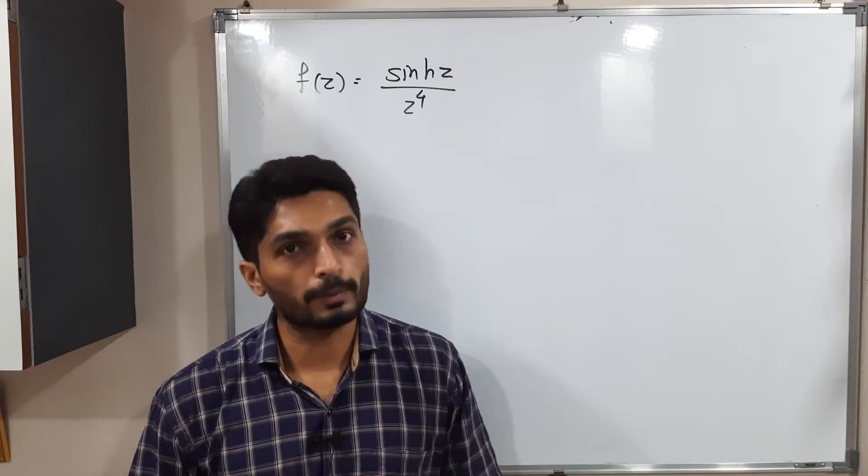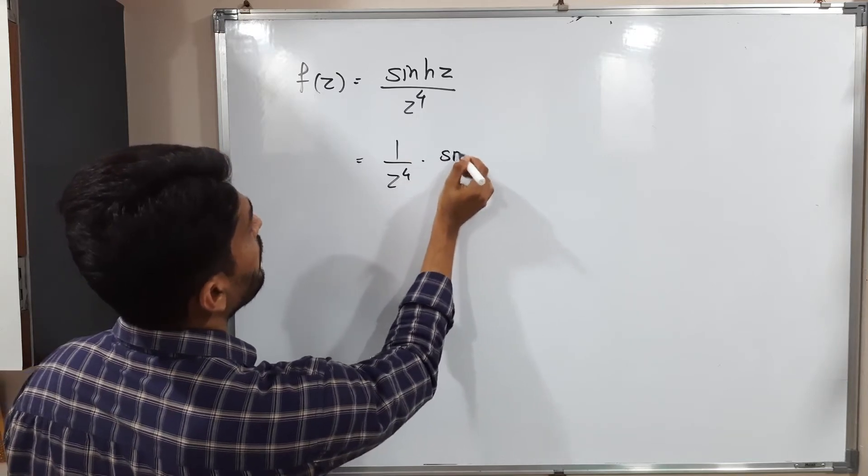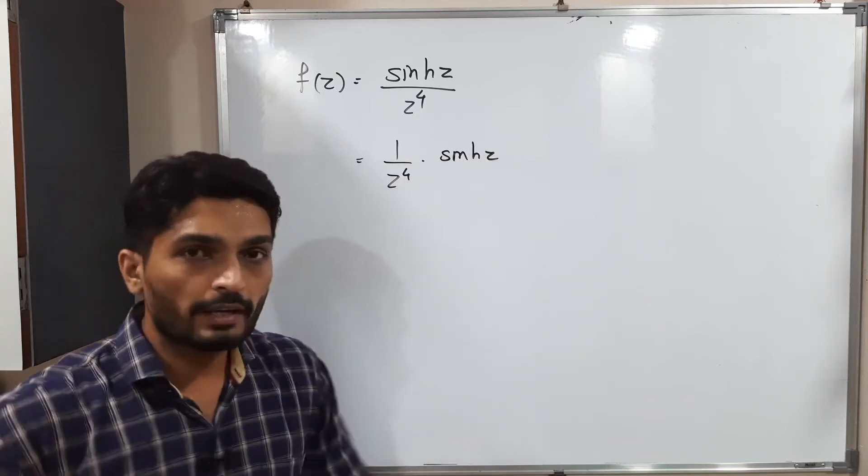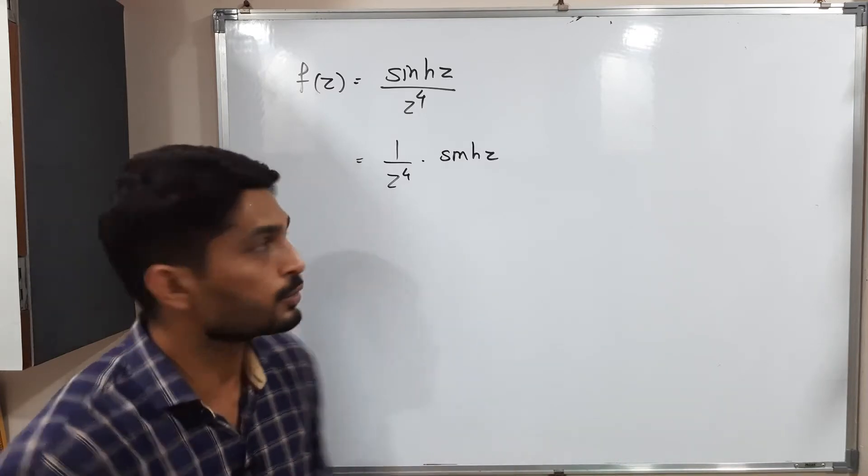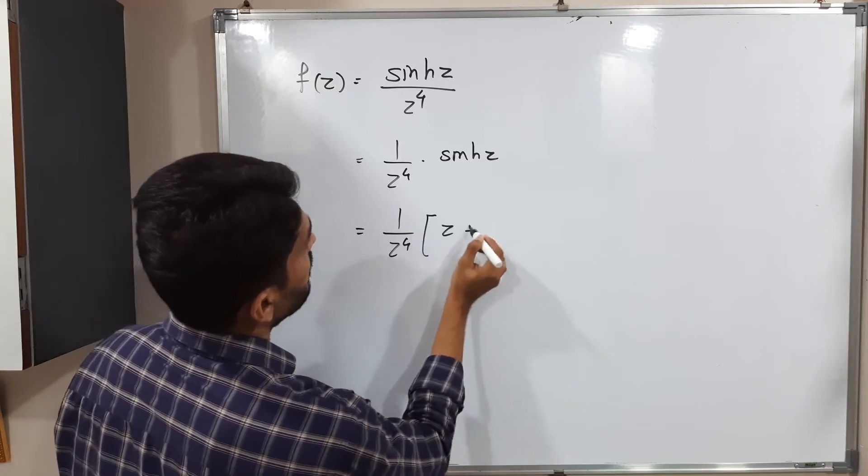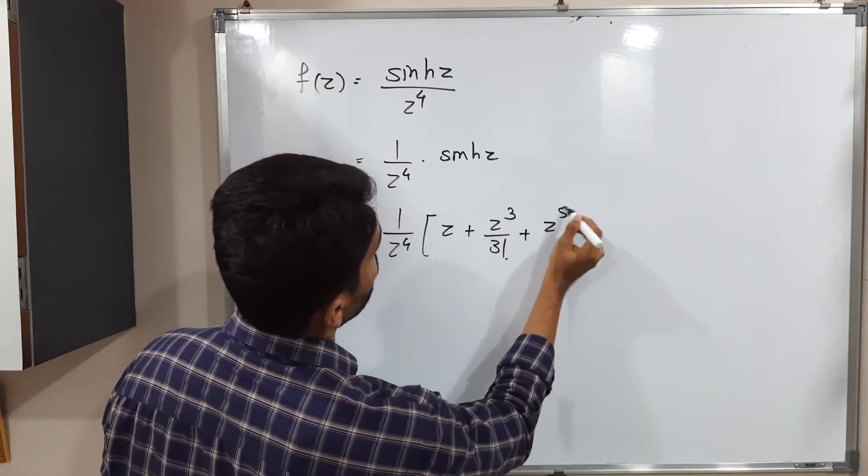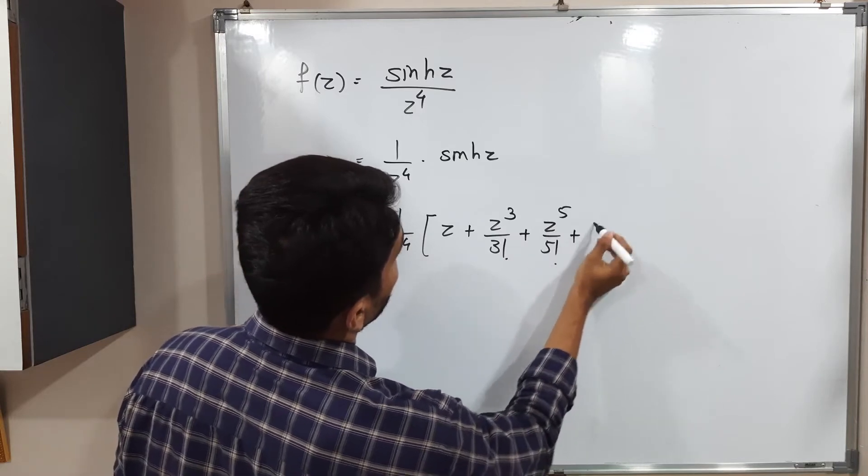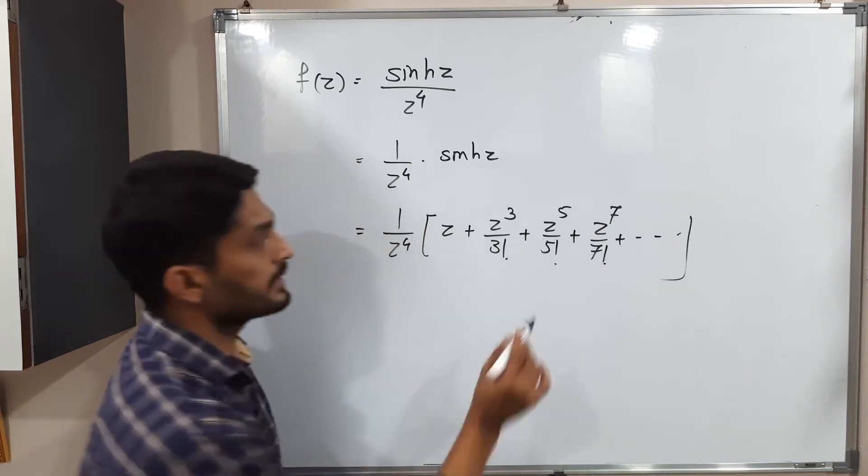Let us see how to solve the problem. What will I do? I will write this as one upon z raised to four times hyperbolic sinh z. We are familiar with this expansion of sinh z. Let us use it here. This is equal to one upon z raised to four times [z + z³/3! + z⁵/5! + z⁷/7! + ...].